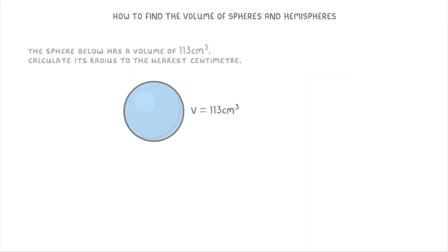For something a bit harder now, let's have a go at this question here. This time we're told that a sphere has a volume of 113 centimeters cubed, and we need to calculate its radius to the nearest centimeter.